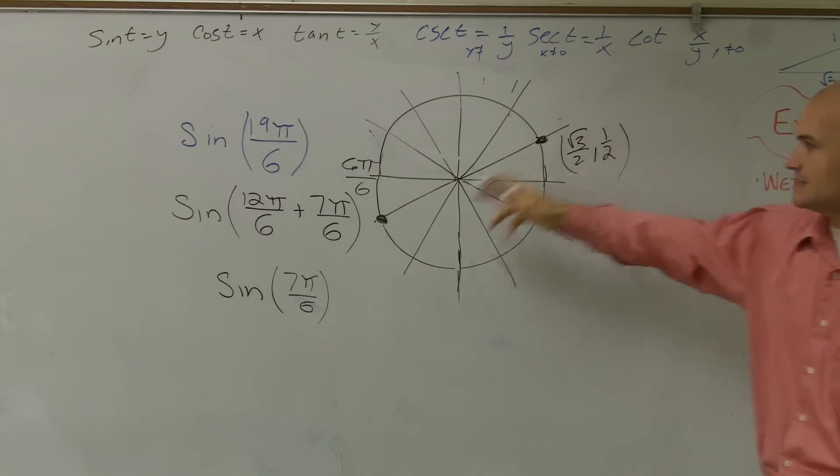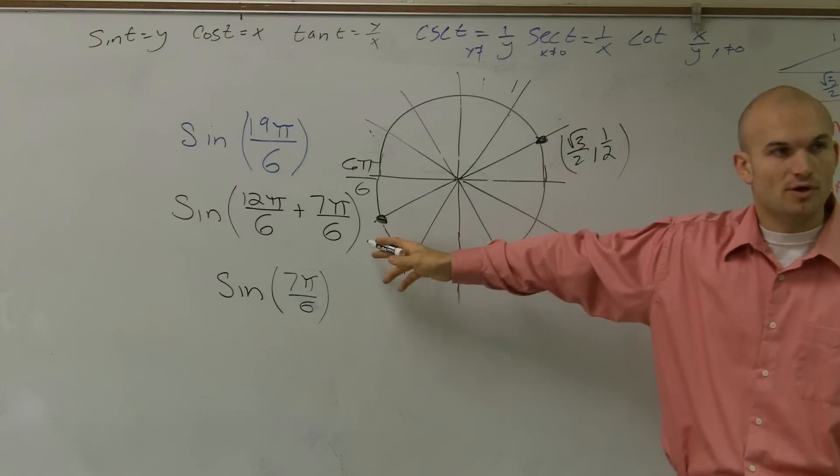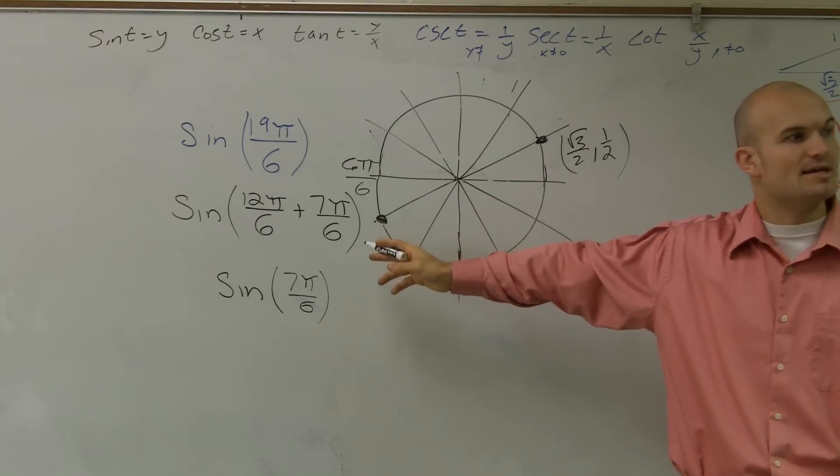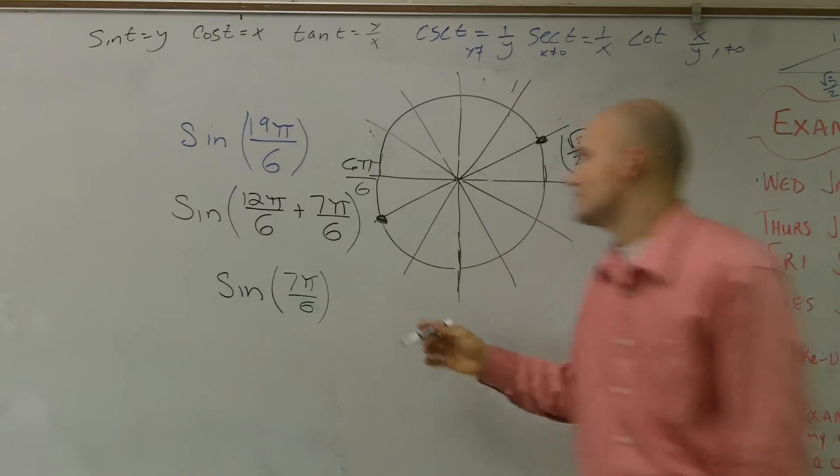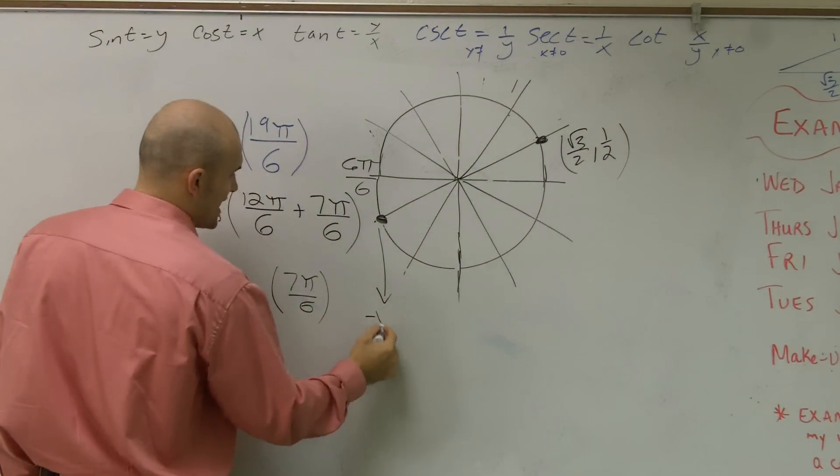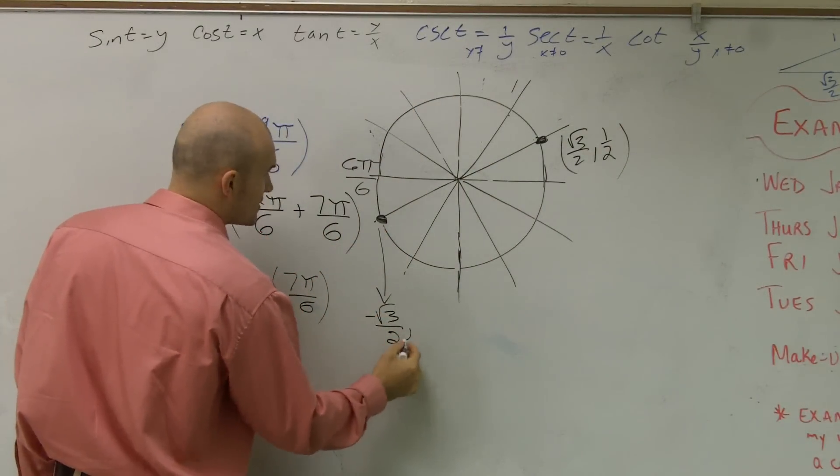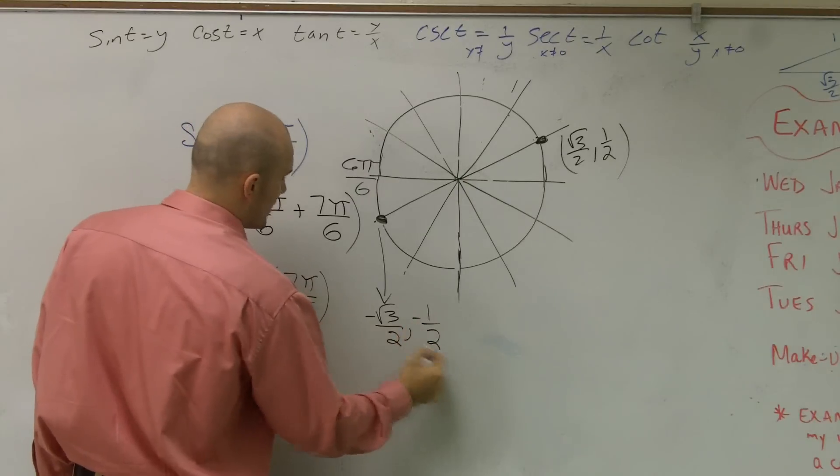Well, if you think about it, to get to this point, if these two are both positive, in the third quadrant your x and y's are both negative. So this coordinate point is now going to be negative square root of 3 over 2, comma, negative 1 half.